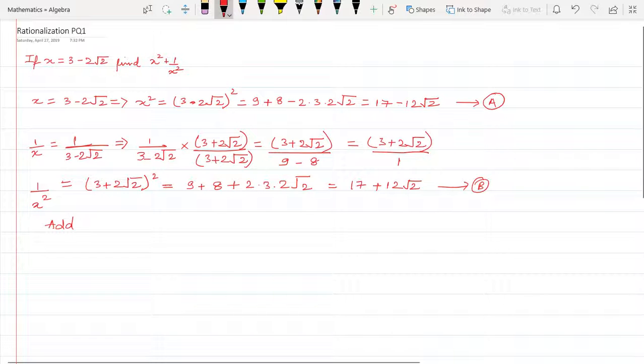Now what I have to do is add Part A and Part B. What we get by adding Part A and Part B is: x squared plus 1 upon x squared is equal to Part A, which is 17 minus 12 root 2.